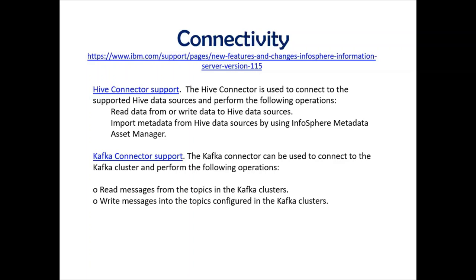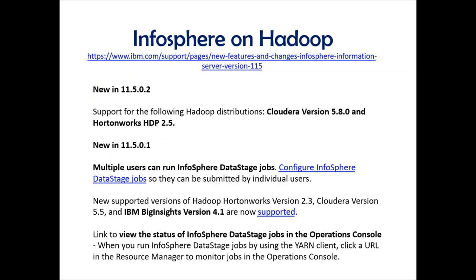There is better Hive connector support and Kafka connector support — both related to big data. For Hadoop and big data, Cloudera version 5.8.0 and Hortonworks HDP 2.5 are all supported. Multiple users can now run DataStage jobs with different individual user IDs on the same jobs. The status of infrastructure DataStage jobs can now be viewed in the Operations Console as well, which is related to Yarn Client and big data. These are the advanced features in DataStage 11.x that you will get compared to lower versions.